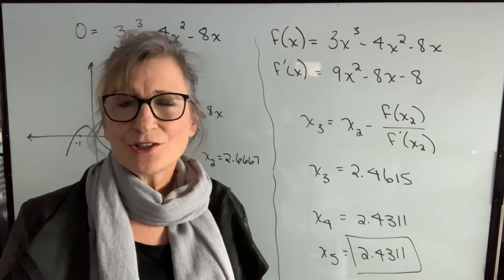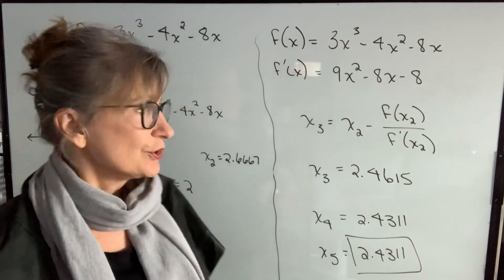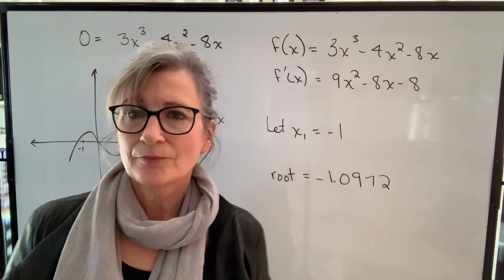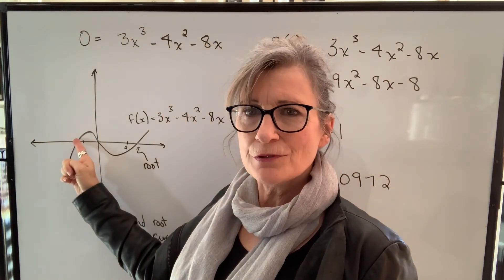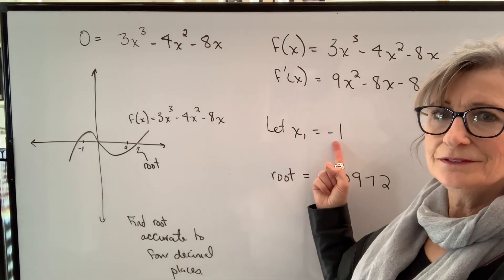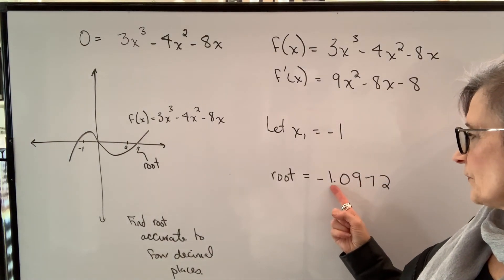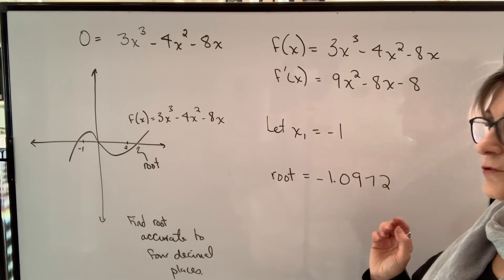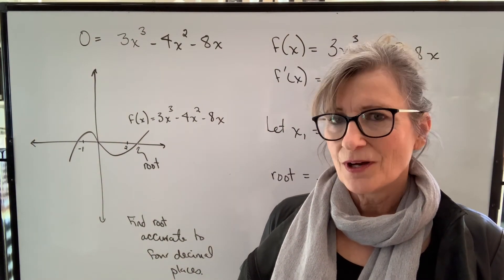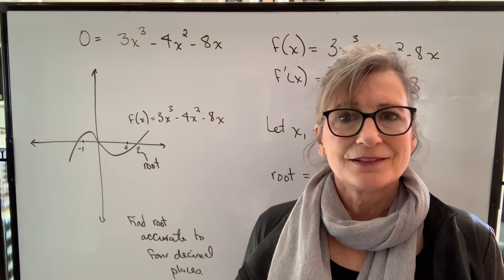But it's not easy on your calculator. Get very familiar with how to use the memory function and your orders of operations. If you want to practice this again, you could use the same function and you could find this root. Let your first guess be negative 1 and I'm not sure how many iterations it will take but you should end up with negative 1.0972 as your root accurate to four decimal places. I would highly recommend that you practice this and get good with your calculator.